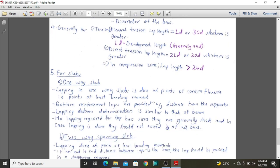For slabs, slabs actually are a series of beams, and majorly slabs are lapped the same way beams are lapped. And for one-way slabs, lapping is normally provided at points of contra fracture. These are points where we have least bending moments.